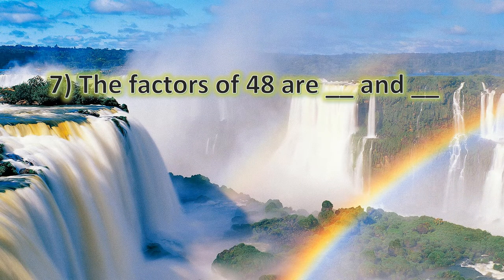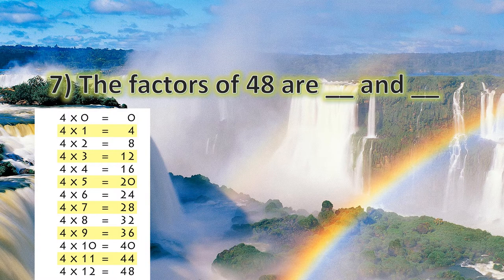The seventh question: the factors of 48 are dash and dash. Let's use the 4 times table: 4 ones are 4, 4 twos are 8... 4 elevens are 44, 4 twelves are 48. We got it! The answer is 4 and 12, so we write 4 and 12 in the blanks.